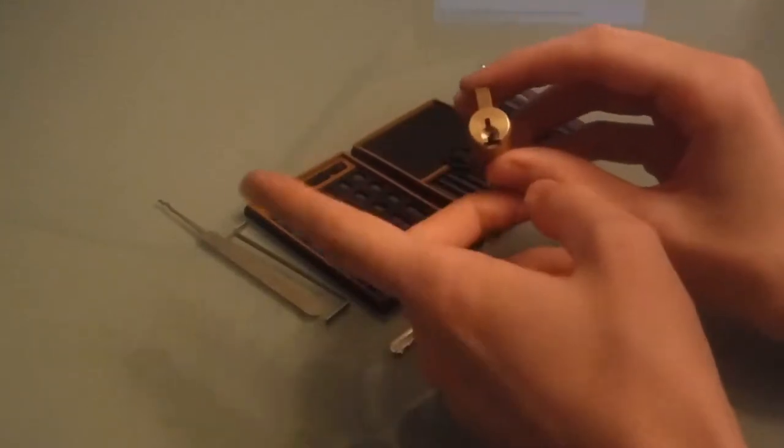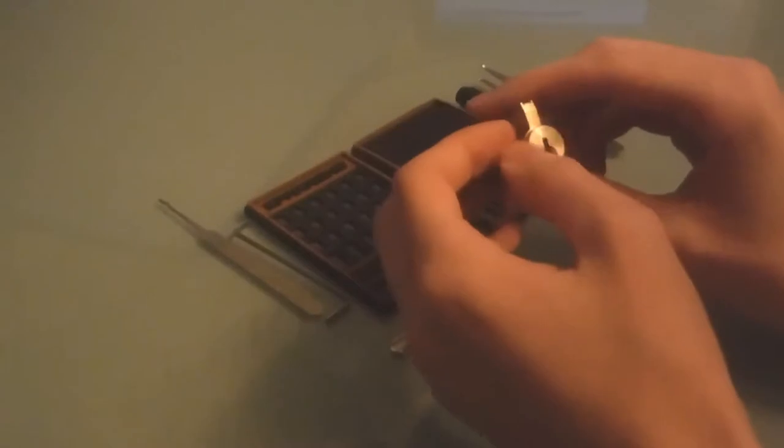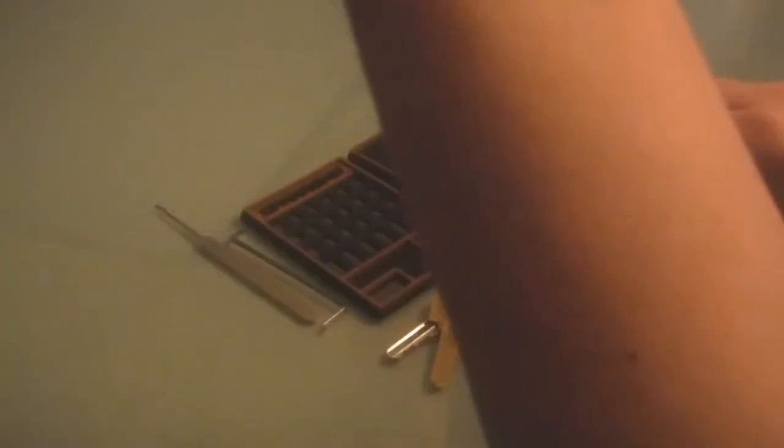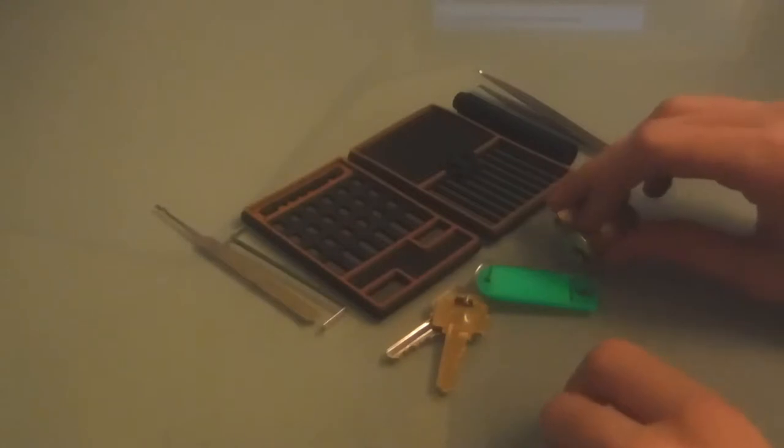Today we're gonna be picking, gutting, and repinning this little LSDA cylinder. Not really sure what the model is. You could probably get like a lot of 20 if you wanted to off of eBay for pretty cheap. I got this keyed from a local locksmith for five bucks.